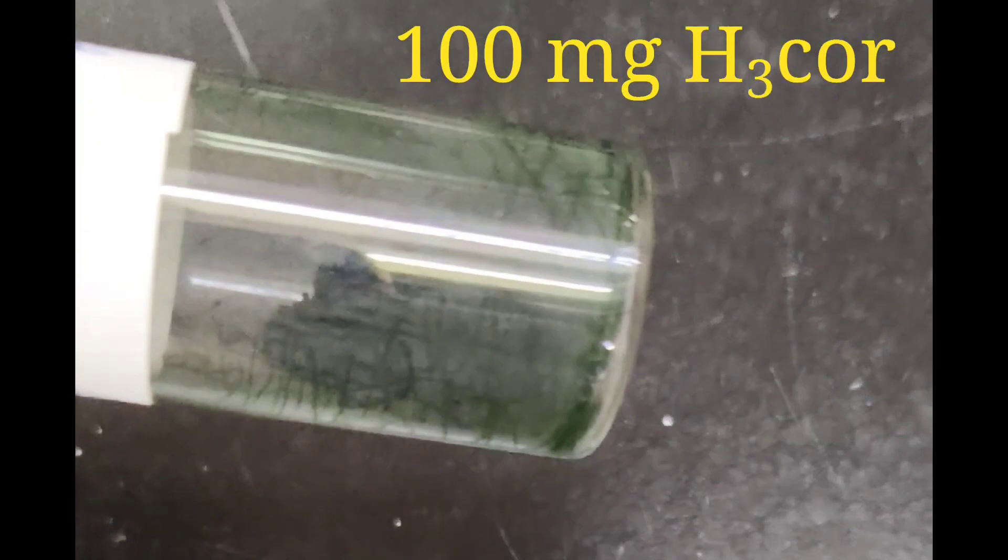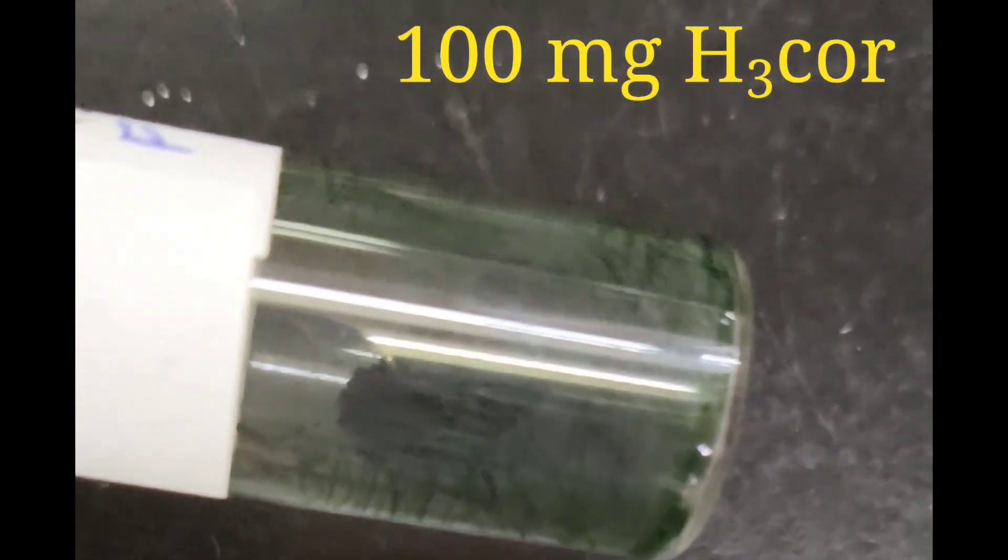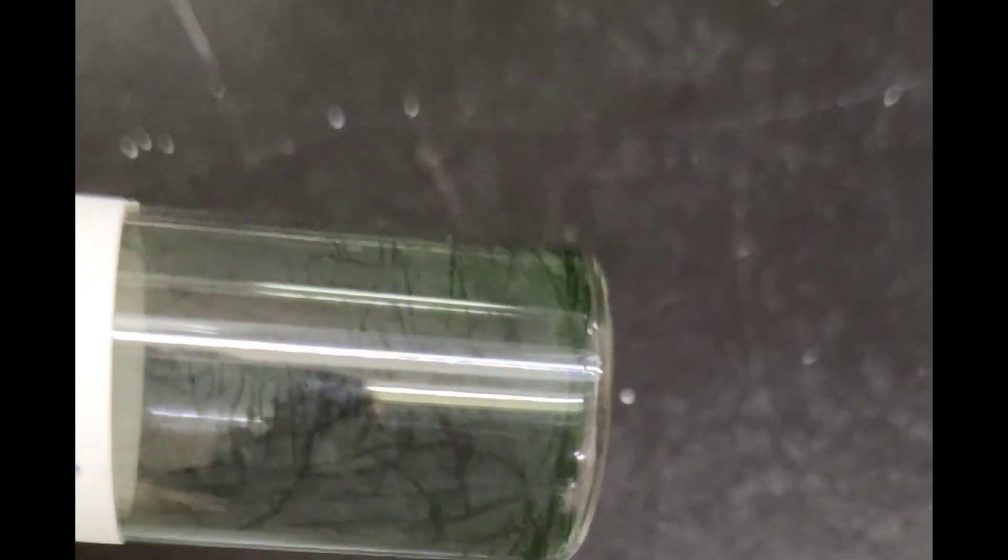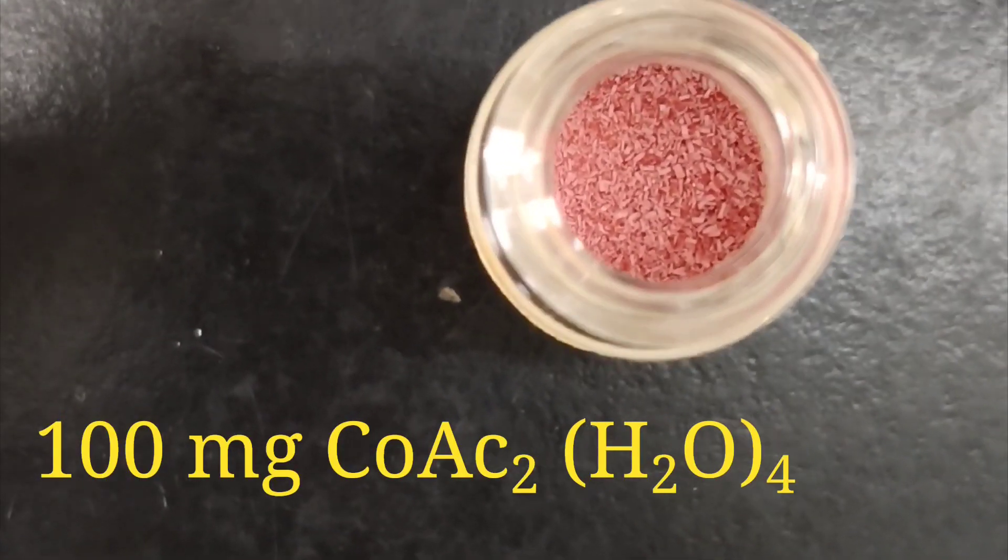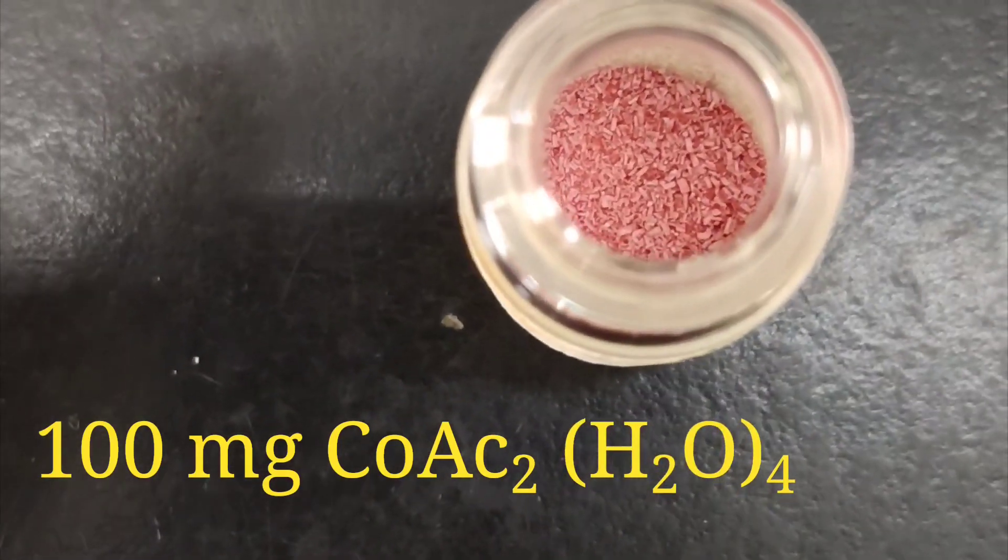First we weigh 100 milligrams of the freebase corrole which can be seen in this vial. We also weigh 100 milligrams of cobalt acetate tetrahydrate which is around a 2.5 molar excess.